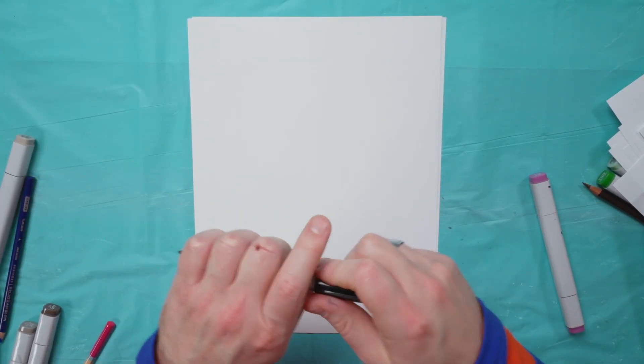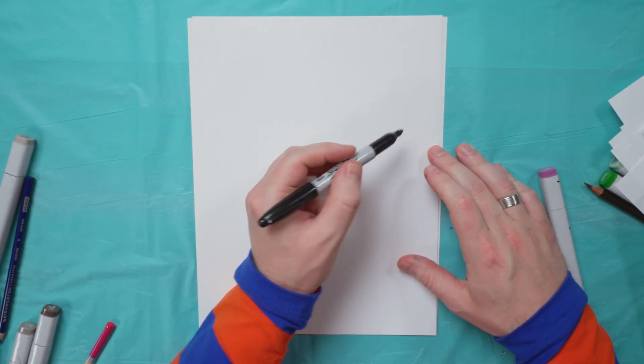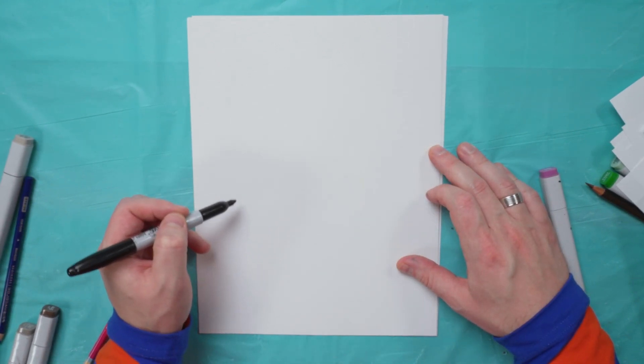First, we're going to start with our black marker. We want to make sure that we're not running off the page. This one's a little wider, so we're going to start here and work our way to here.